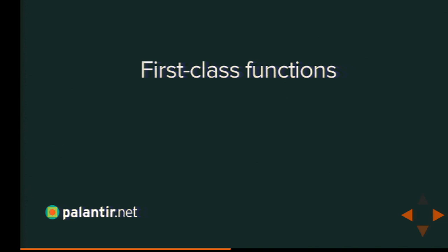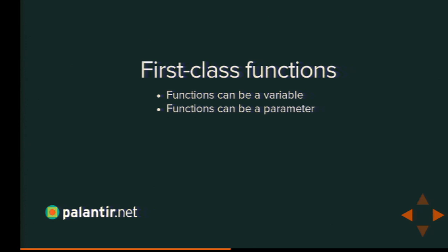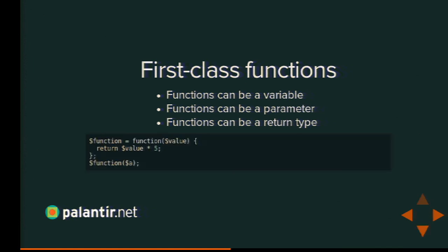And finally, first-class functions — these are the fun ones. First-class functions, higher-order functions — these are functions that can be a variable and therefore can be a parameter to another function or even returned from a function. Anything you can do with a variable that is an int, or a string, or an object, you can do with a variable that is a function. In PHP, we have anonymous functions added in 5.3. The syntax looks like this: we define a function that takes one parameter and returns that parameter times five, and we assign that function — that piece of executable logic — to a value, then invoke that value with some parameter.